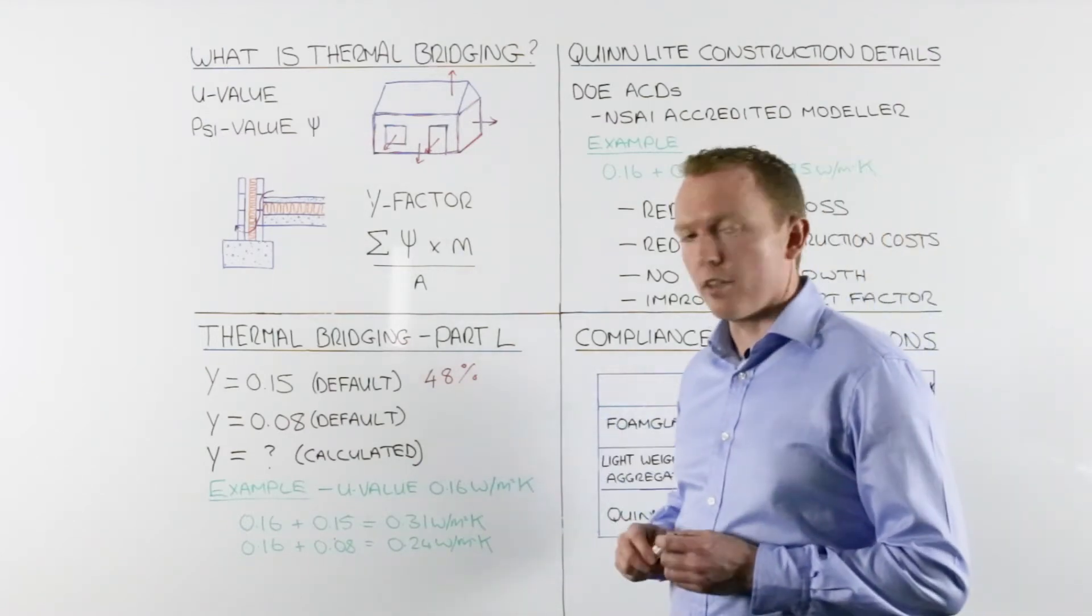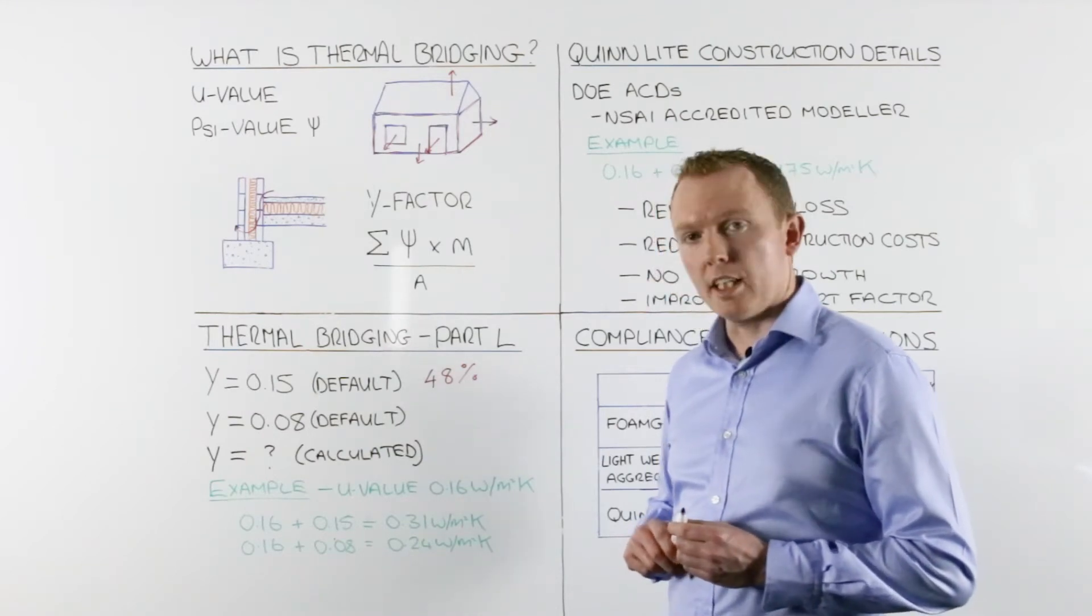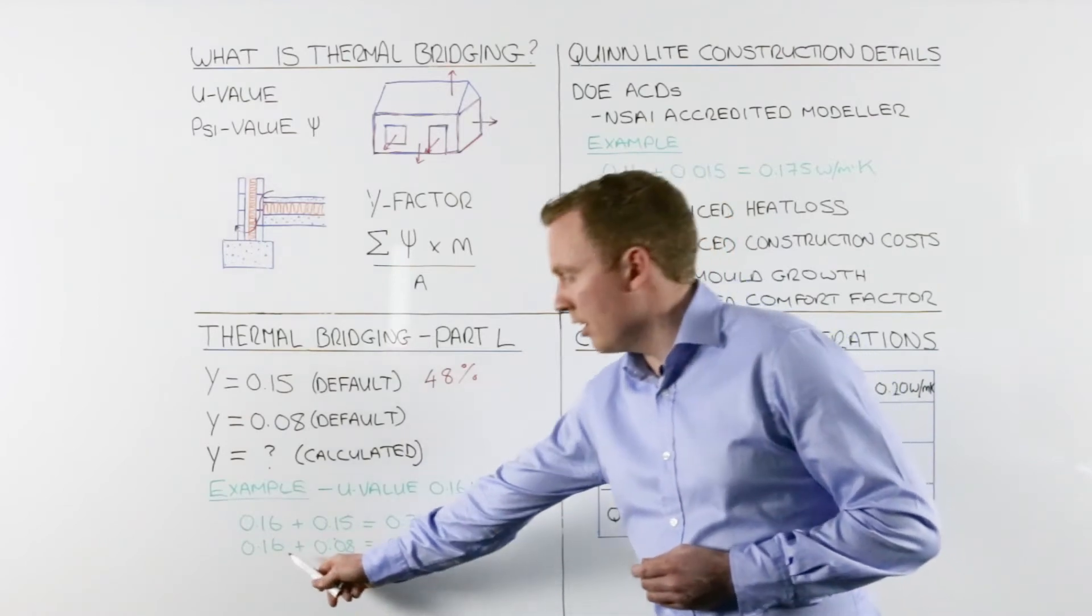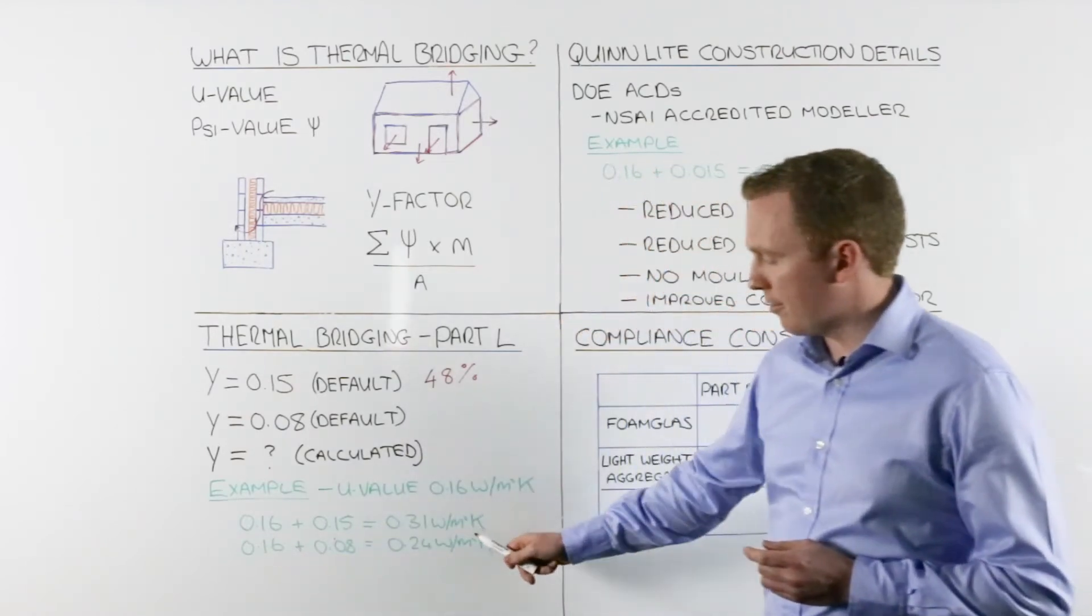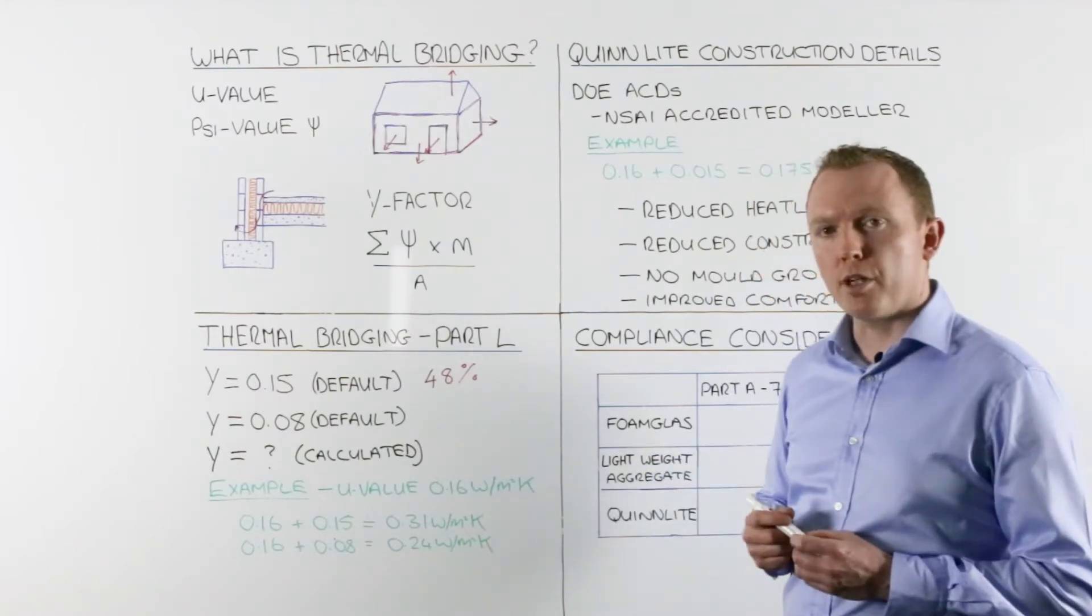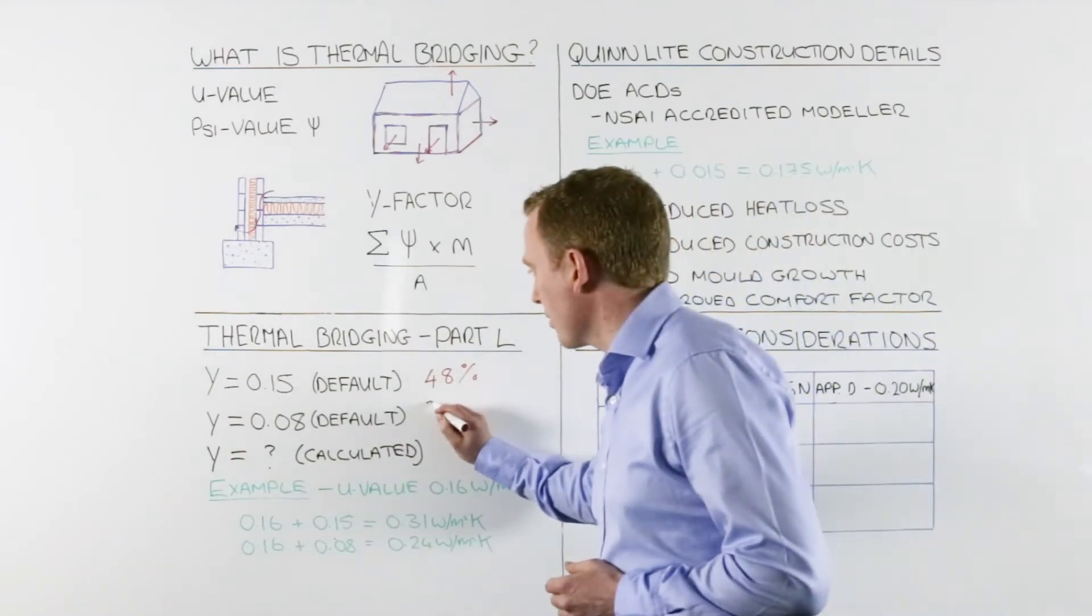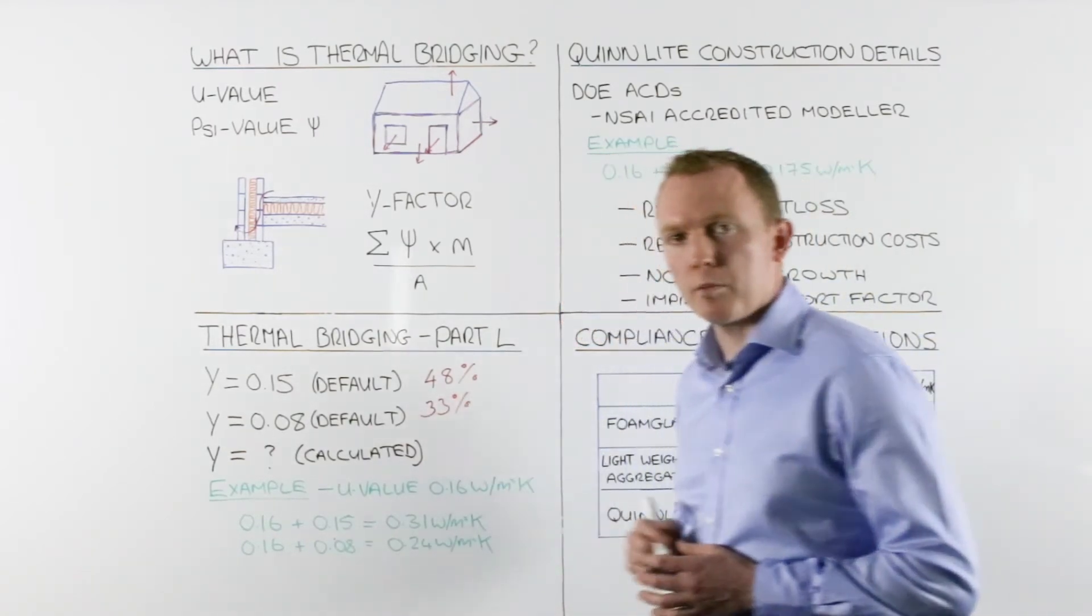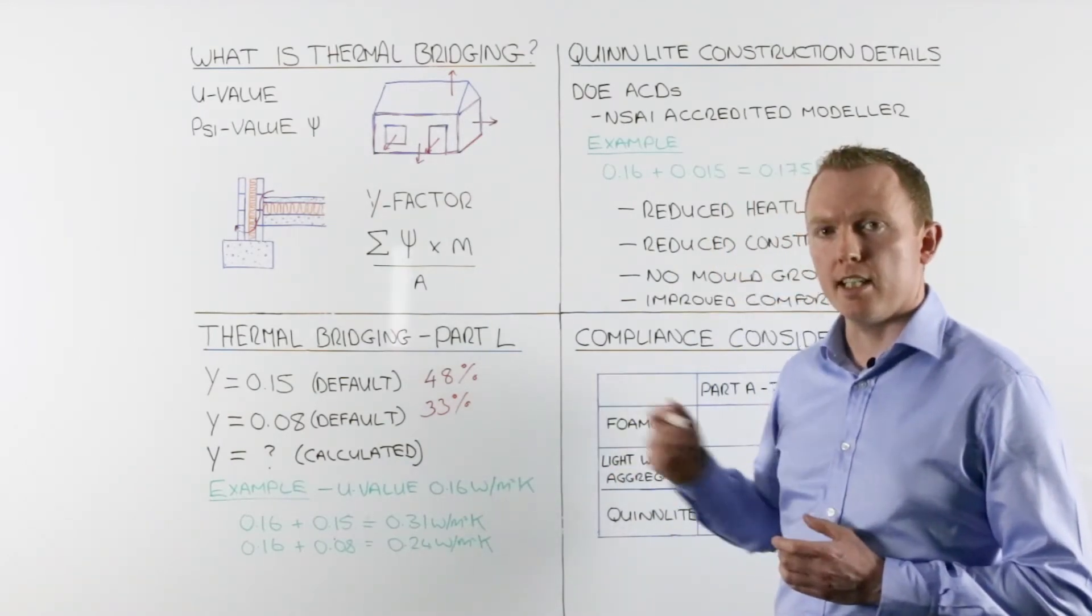Looking then at the example for the default value of 0.08, what the DEAP software does is add 0.08 to our average U-value of 0.16 to give a heat loss of 0.24 watts per meter squared kelvin. That equates to 33 percent of heat loss through thermal bridging. Whilst it's a lot better than 48 percent, it's still not accurate.